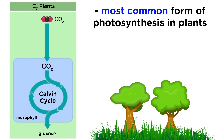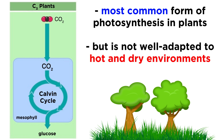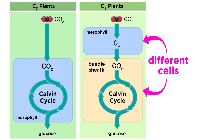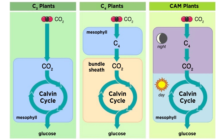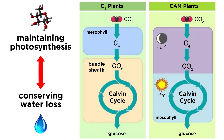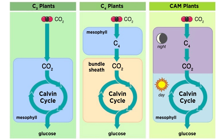To summarize: C3 photosynthesis is the most common form of photosynthesis in plants, but it is not well adapted to hot, dry environments. In C4 photosynthesis, carbon fixation and the Calvin cycle occur in different types of cells, while in CAM photosynthesis these processes occur in the same cells but at different times. These two pathways are two different evolutionary solutions aimed at balancing the competing priorities of maintaining photosynthesis and conserving water during hot, dry days. And with that, we understand a bit about the three known forms of photosynthesis in plants.